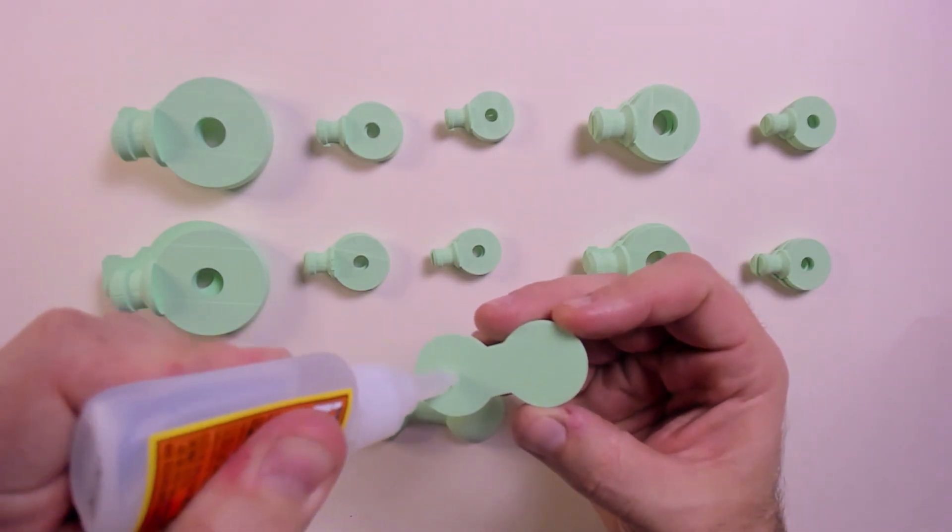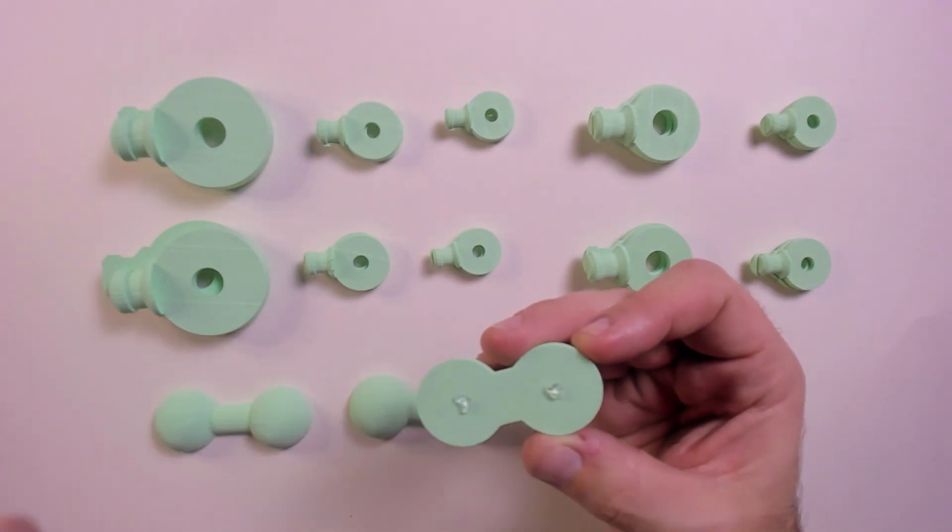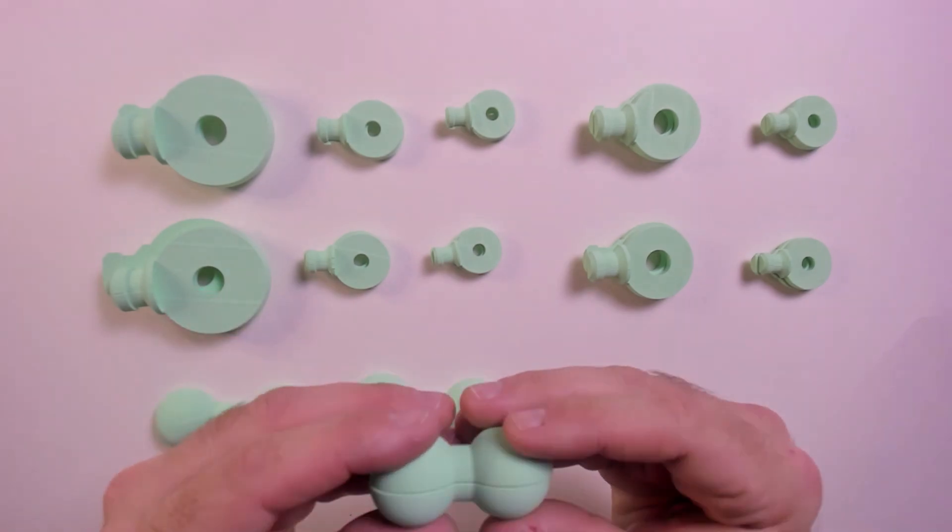I start with the neck barbell and the body barbell. There's a part 1 and 2 for each. I glue each set together with the superglue gel.